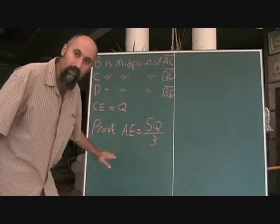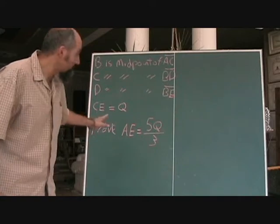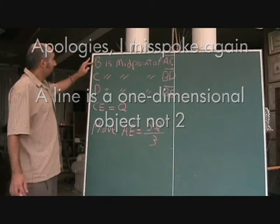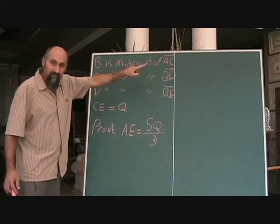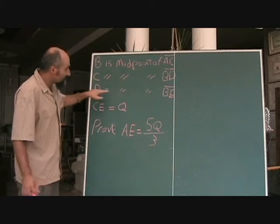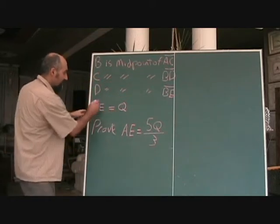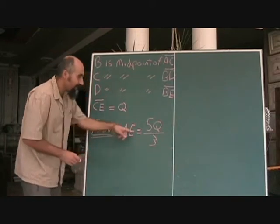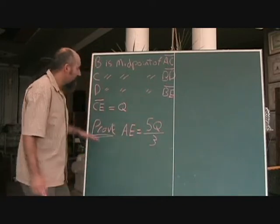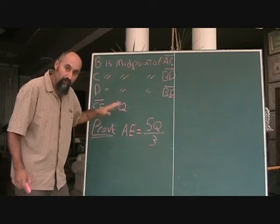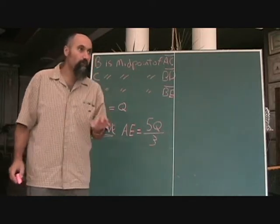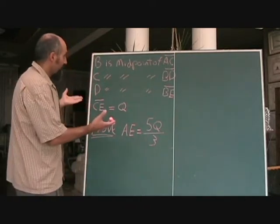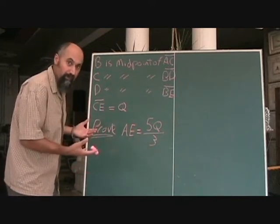Now I'm going to talk about straight-up proofs when it comes to geometry — specifically two-dimensional geometry. Here's the problem laid out in point form. The way you approach solving proofs is you read the question once just to understand what's coming at you, to get a general idea.